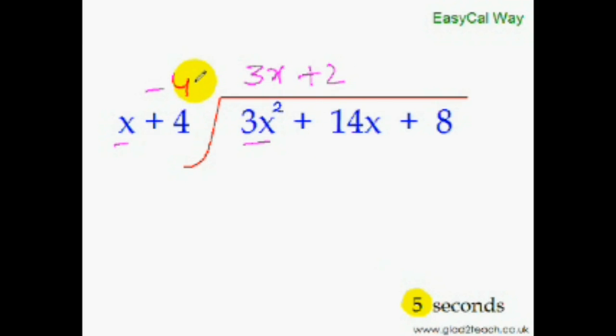Well if you ask me the remainder, I will tell you the remainder as well. The remainder would be minus 4 times 2 is minus 8, minus 8 plus 8 will be 0, so the remainder is 0.